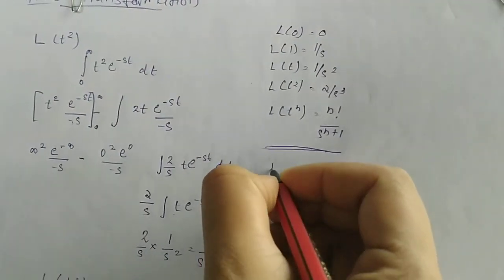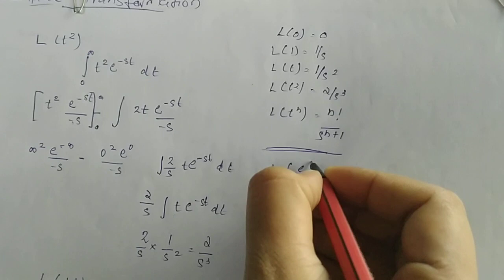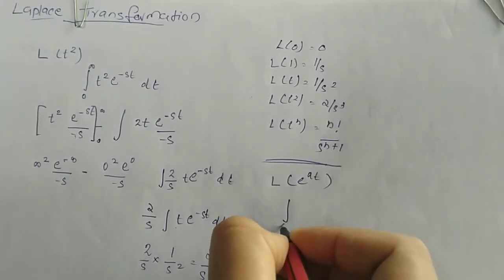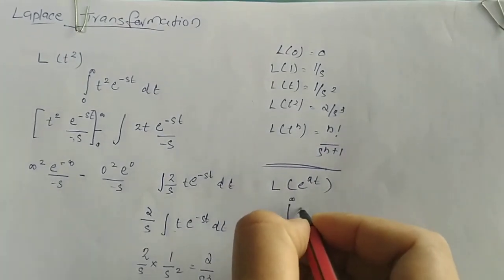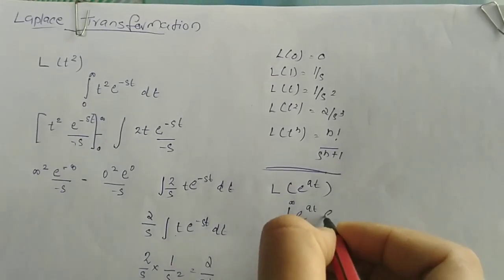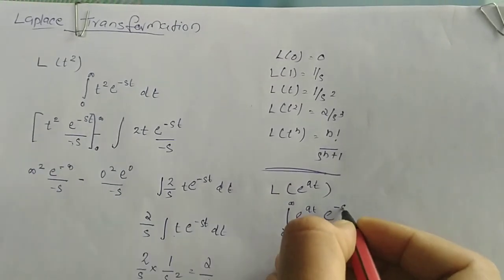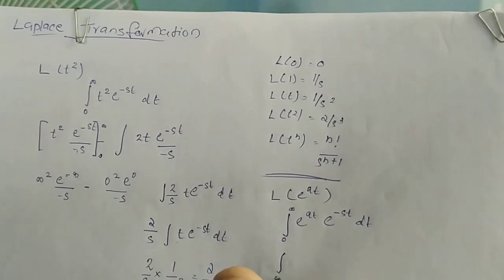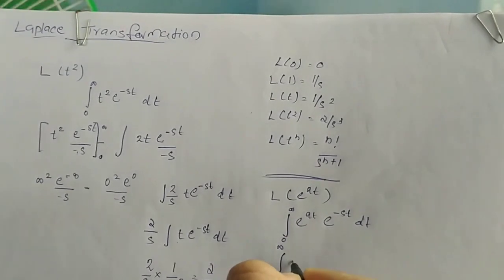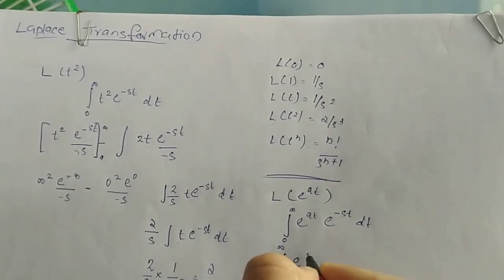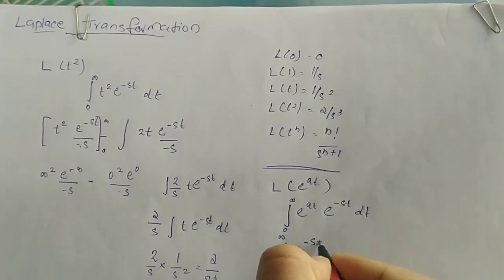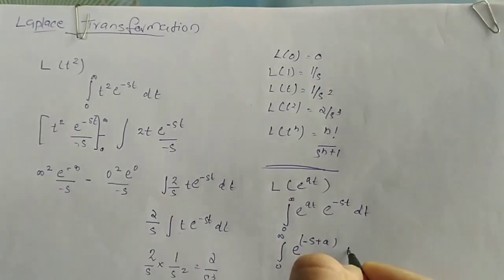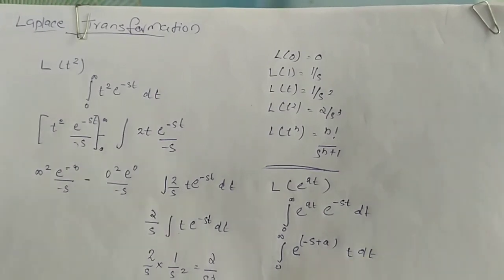Next, we find the Laplace transform of e raised to at. L{e^(at)} equals the integral from 0 to infinity of e raised to at times e raised to minus st dt, which simplifies to the integral from 0 to infinity of e raised to minus s minus a into t dt.